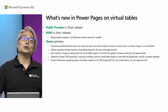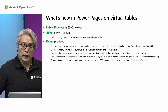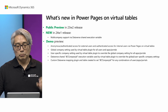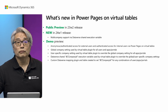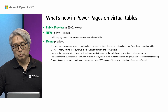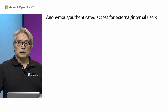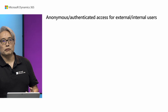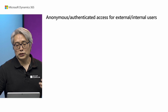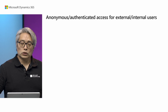Finally, I will show you how to build a custom Dataverse mapping plugin and mapping table that can be created to set the BC Company ID shared variable for any combination of users, Power Apps, and Power Pages portals. But first, let me give you a review of anonymous or authenticated access for external and internal users enabled with Power Pages on Virtual Tables.